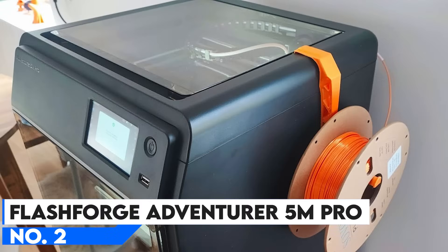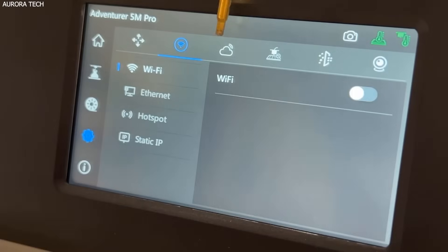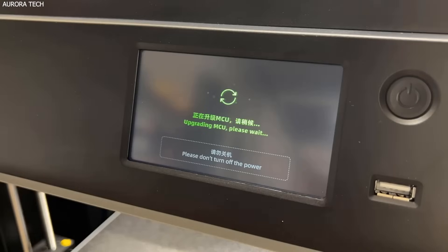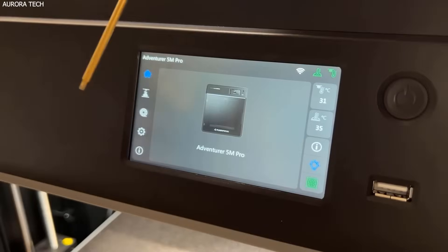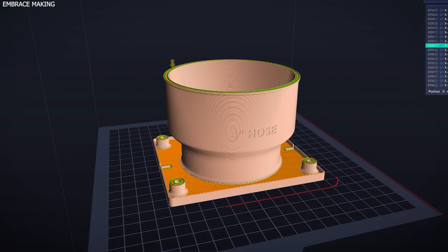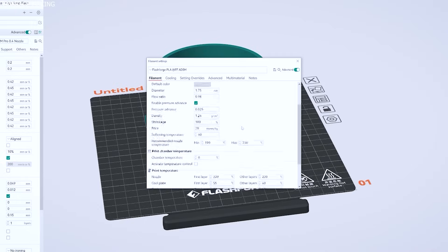Number 2: FlashForge Adventurer 5M Pro, Best for Beginners and Education. For beginners, students, and educators who want an easy-to-use and reliable 3D printer, the FlashForge Adventurer 5M Pro is an excellent choice. This plug-and-play machine is designed with simplicity and safety in mind, making it ideal for classrooms, workshops, and home users.